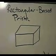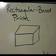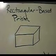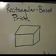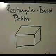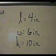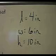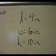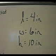Now we've started working with prisms. Let's look at the rectangular-based prism, and we would like to find both its lateral area and its surface area. For this particular rectangular-based prism, let's work with these dimensions. Let the length be 4 inches, the width be 6 inches, and the height be 10 inches. The length and width are referring to the base.